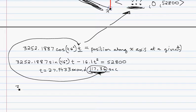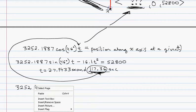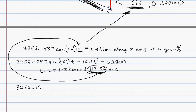So, when we do that, 3252.1887 cosine 46 degrees times the time, 117.36. When you multiply this out, you will get 265,135.0297 feet.